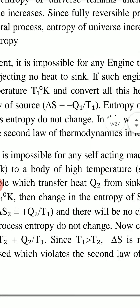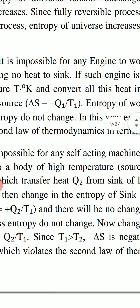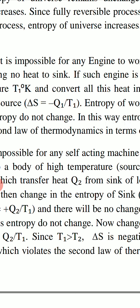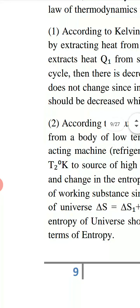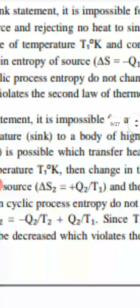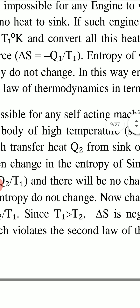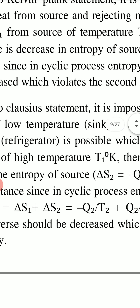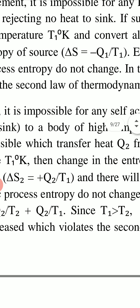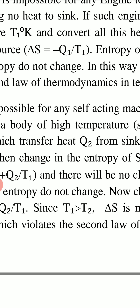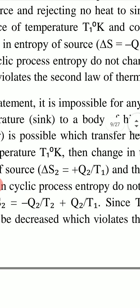Such a heat engine would extract Q1 heat from a heat source at high temperature T1 K, convert this entire Q1 heat into work, and give no heat to the sink. In one cycle, there is a decrease in entropy of the source. The change in entropy of the source ΔS = −Q1/T1, from the definition dS = dq/T.